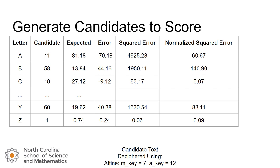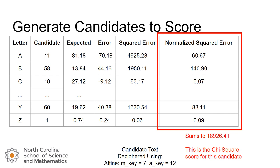And this gives us a way to directly compare how badly we missed, and by missed we mean not create the correct number of letters in our candidate, between all the different letters. So we can see that we did better on C. We were closer to getting the correct number of C's in our candidate than we were for Y's because the normalized squared error of 3.07 is much smaller than the normalized squared error of 83.